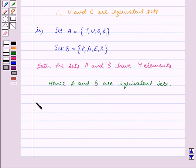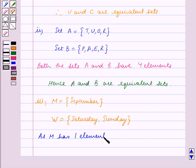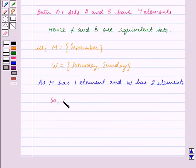For the third part, M is equal to the set containing the word 'September' and W is equal to the set containing the words 'Saturday' and 'Sunday'. We can see that M and W do not have the same number of elements — M has one element and W has two elements. So M and W are not equivalent sets.